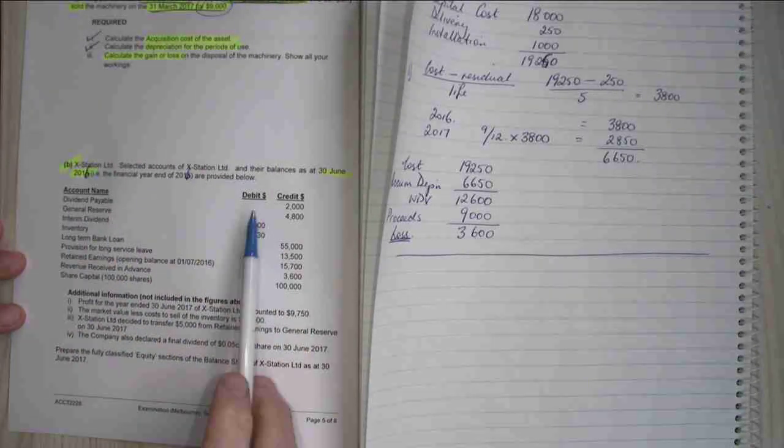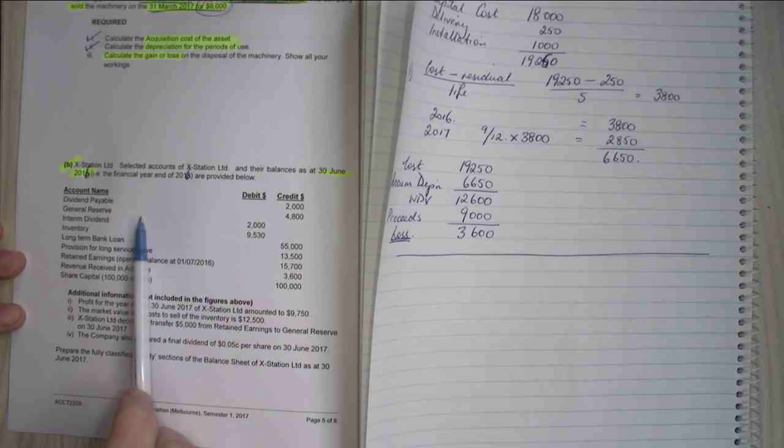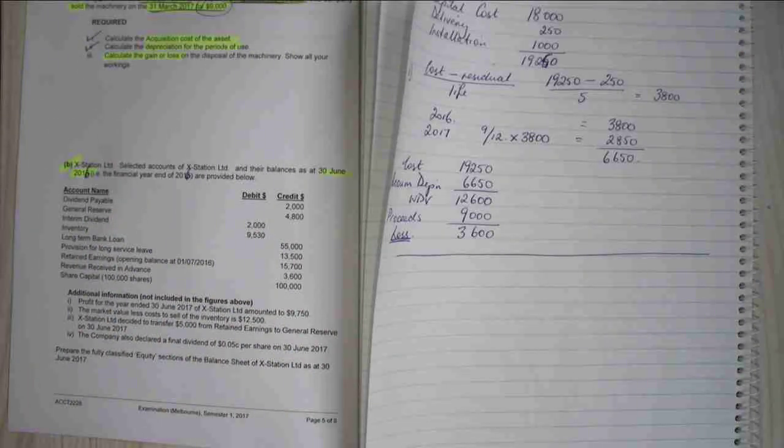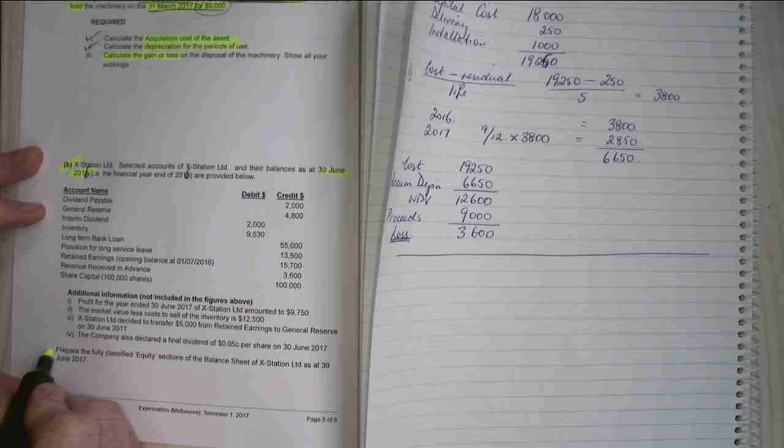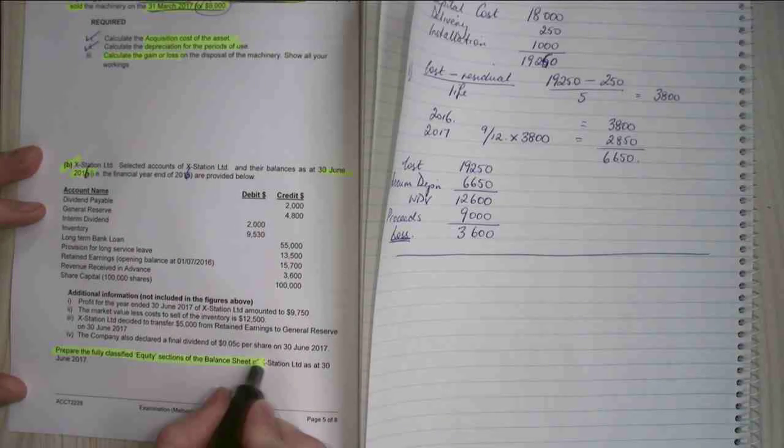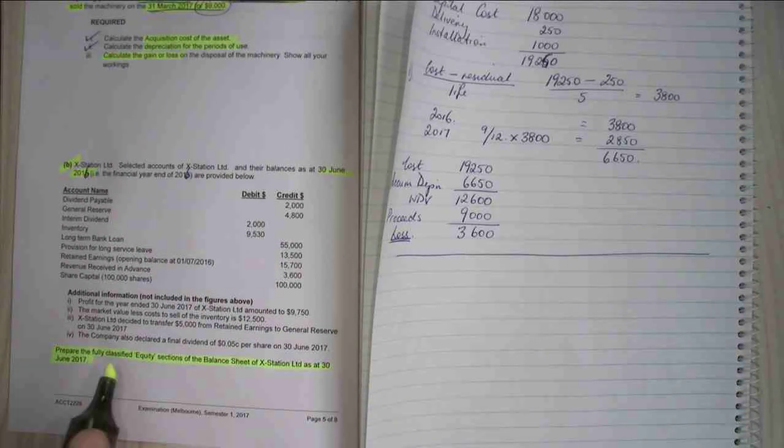Alright, so my dividend payable, general reserves, interim dividends. What am I supposed to do here? It's asking me to prepare a fully classified equity section of a balance sheet that's at the 30th of June 2017.